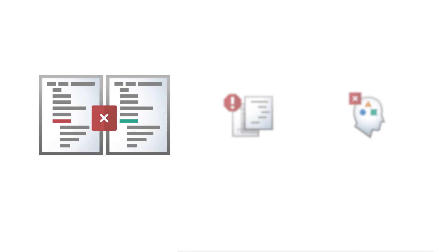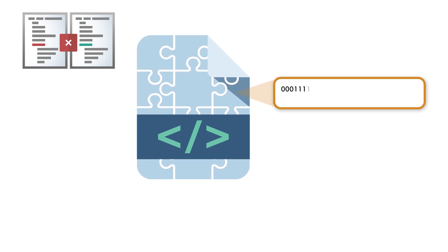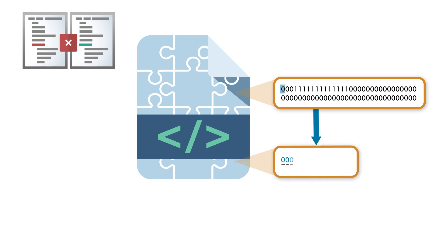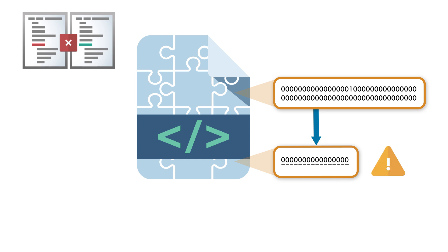An example would be ensuring different components of a rocket's control software work together correctly. The Ariane 5 rocket disaster was fundamentally due to this type of integration error. One piece of the rocket's software was outputting a 64-bit data type to another piece that expected a 16-bit data type as input. When the data value grew larger than can be represented with a 16-bit data type, there was an integer overflow, which ultimately resulted in the rocket exploding during its ascent.